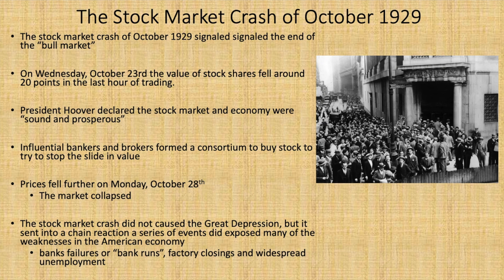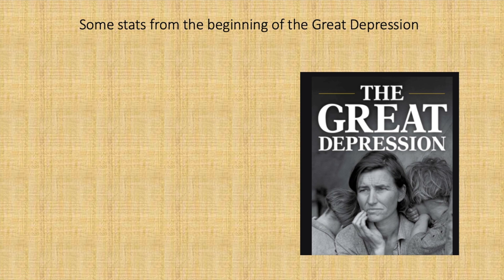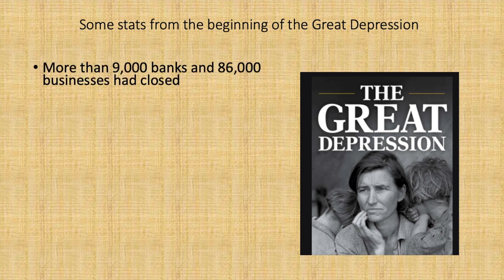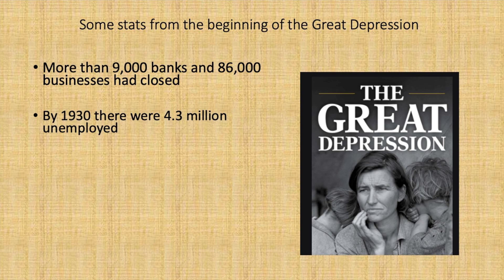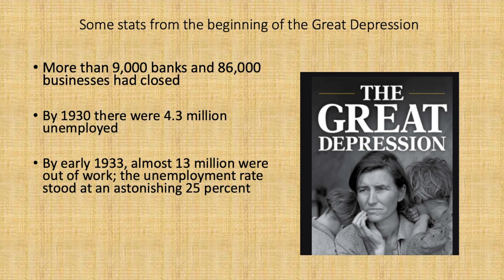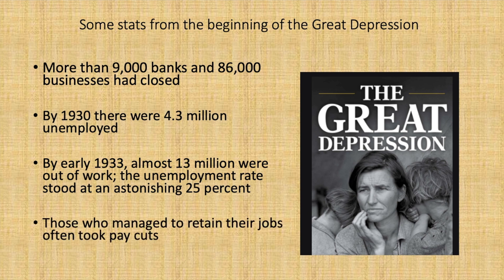So what were the direct results of the stock market crash? There were bank failures, often called bank runs, factory closings, and widespread unemployment. More than 9,000 banks and 86,000 businesses had closed in the first couple of years. By 1930, there were 4.3 million people unemployed. By early 1933, almost 13 million were out of work. The unemployment rate stood at an astonishing 25%. Those who managed to retain their jobs often took pay cuts. Many experts and historians claim that the Great Depression was the price the United States paid for a lack of regulation and oversight of American businesses and banks.